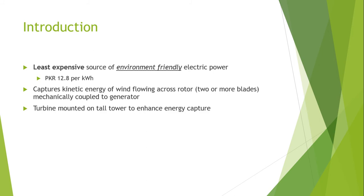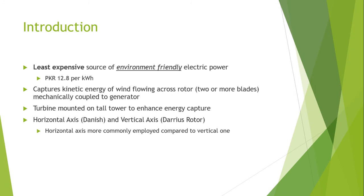Turbines are mounted on a tall tower to enhance electric energy capture. There are two basic types of windmills: the horizontal axis windmills and the vertical axis windmills, which are named the Danish and Darius rotor. Horizontal axis windmills are more commonly employed compared to the vertical ones.